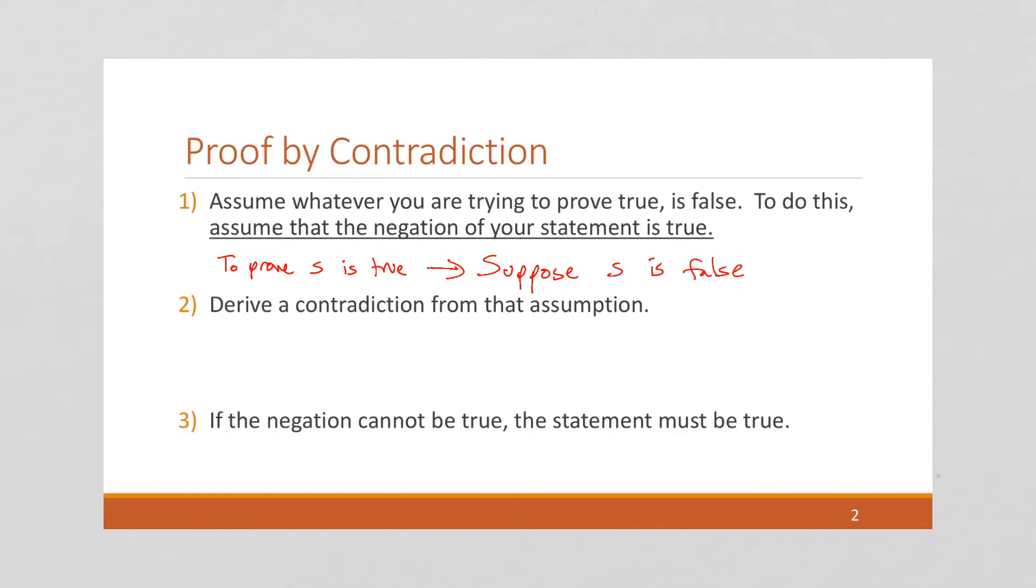Now, sometimes we can do this with a universal conditional statement. If S is a universal conditional statement, we take the negative of a universal conditional statement. But S doesn't have to be a universal conditional statement. And in this example, it's not. And so, I'm not going to write out the steps for converting a universal conditional statement to its negation.